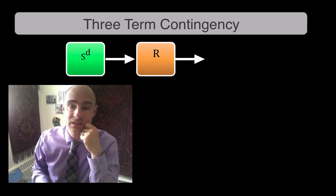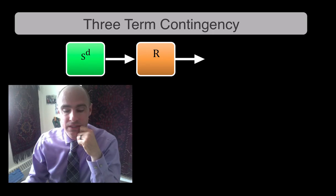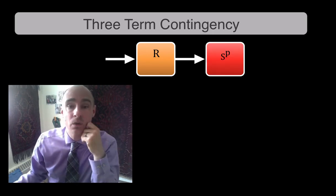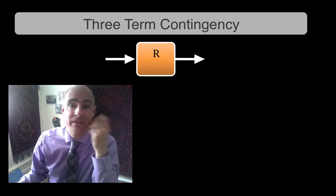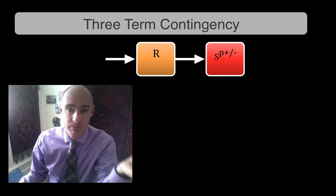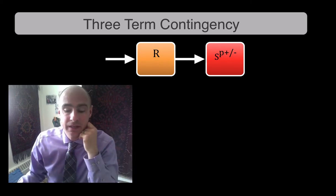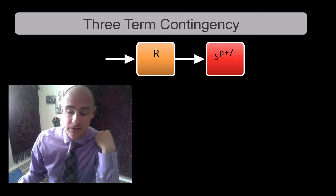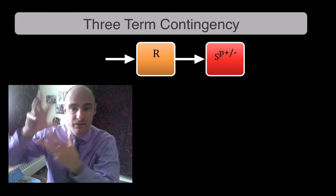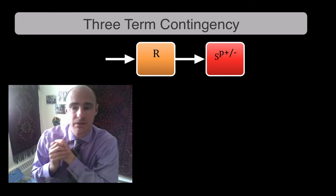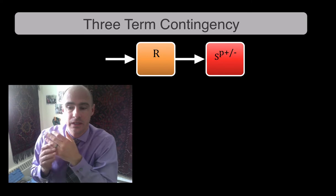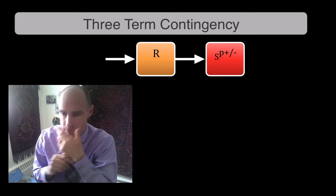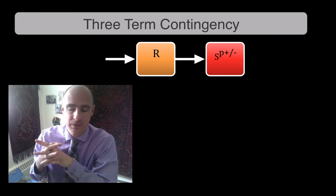which leads us to another consequence notation that exists, which is SP, or a stimulus that punishes. So then you would have an SP plus and an SP minus. Positive punishment, negative punishment. So that's the notation for that third, that consequence piece, right? The third term in the three term contingency.